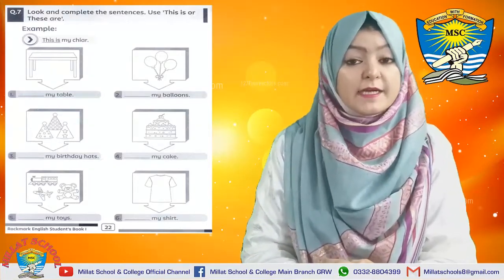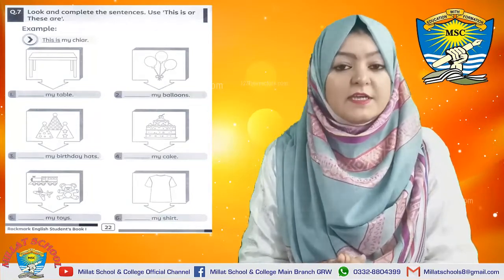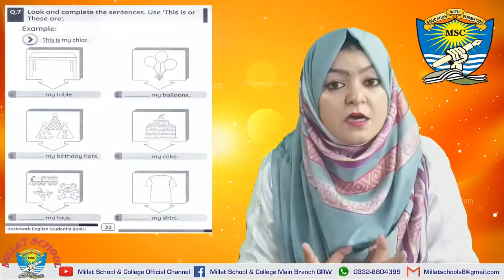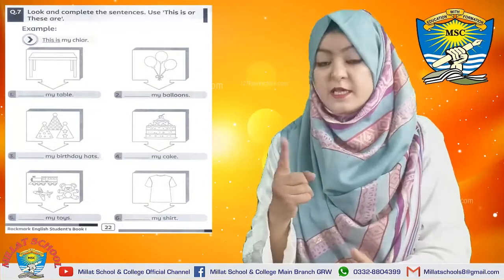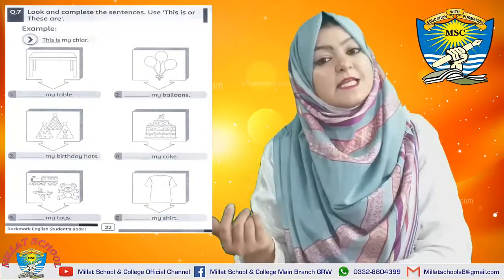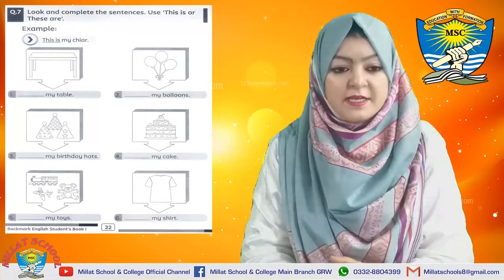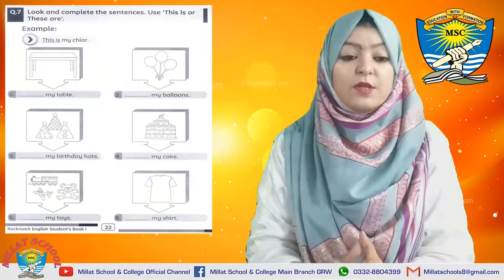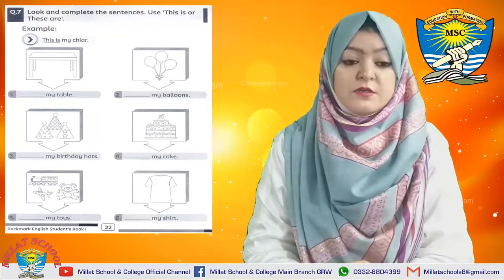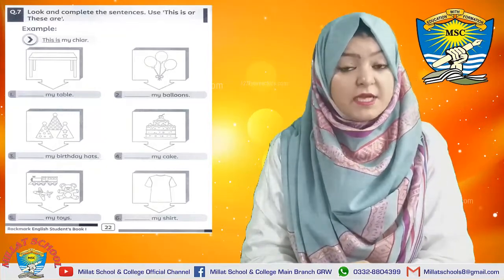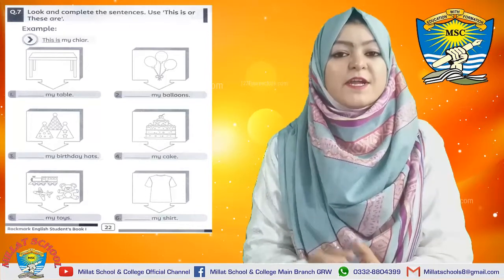Question number 7: Look and complete the sentences — use 'This is' or 'These are.' You have to look carefully at the picture and decide: if it is one thing, use 'this'; if there are more things, use 'these.' In the first picture there is one table — it is one. So what will we write: 'This is my table' or 'These are my table'?